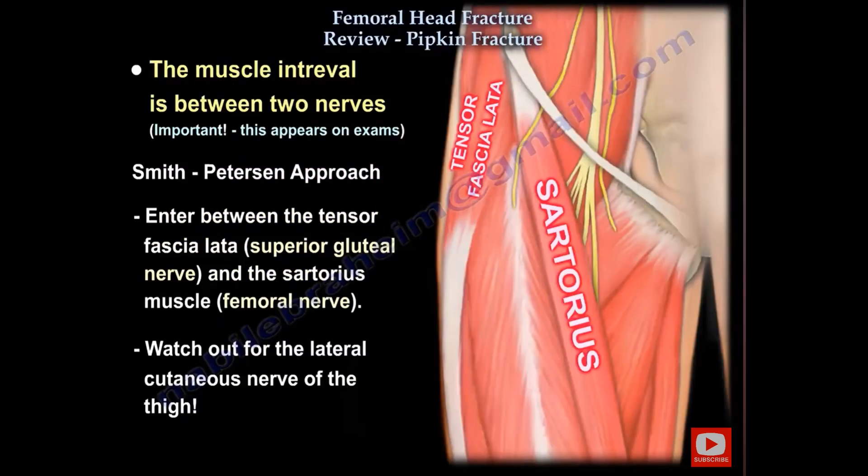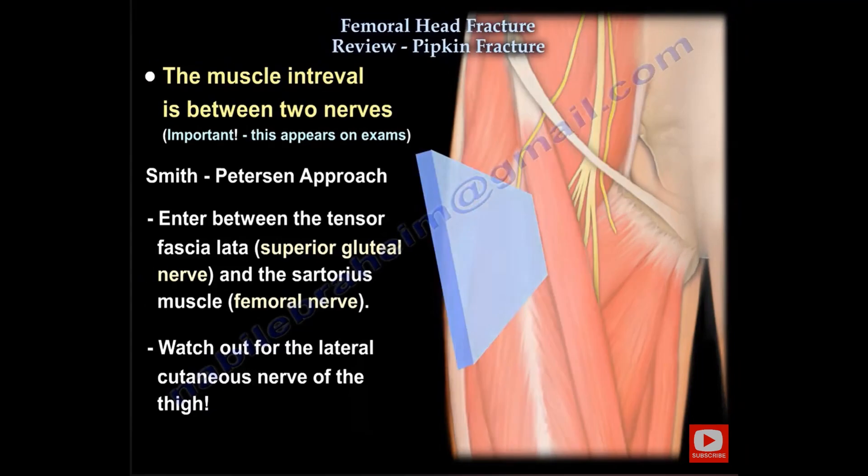In the Smith-Petersen approach, you go between the tensor fascia lata, supplied by the superior gluteal nerve, and the sartorius, supplied by the femoral nerve. Here is the interval between the two muscles representing those two nerves.